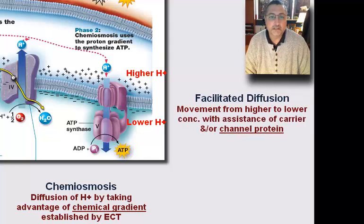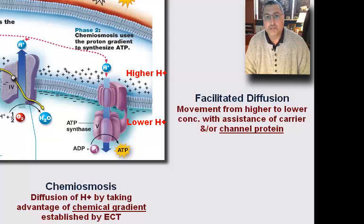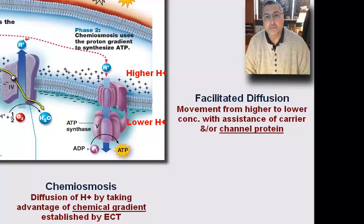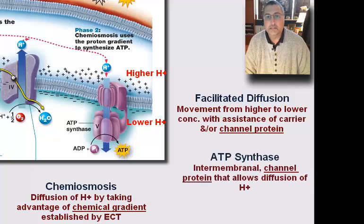Chemiosmosis is a facilitated diffusion mechanism. It allows the movement of a molecule across the membrane, but it requires a pore — in this case a channel protein — for that molecule to be carried through. The molecule is going to be moving back in for free, from a region of higher concentration to a region of lower concentration. It's going to be hydrogen ions moving through a pore created by an inner membranal protein known as ATP synthase.